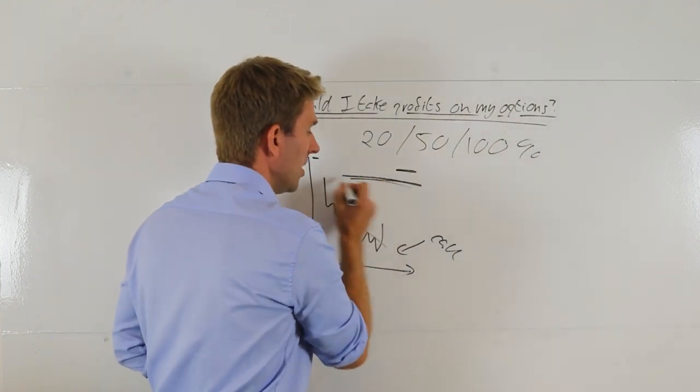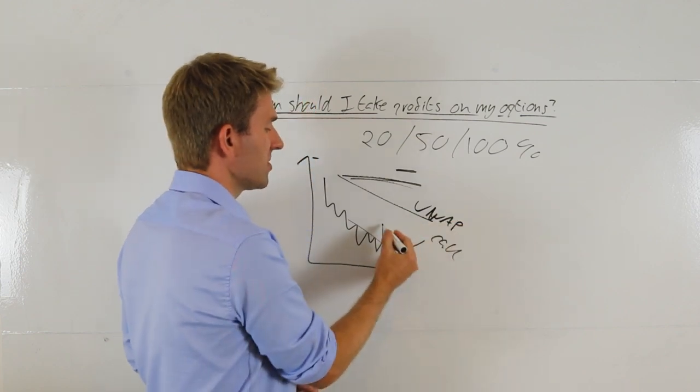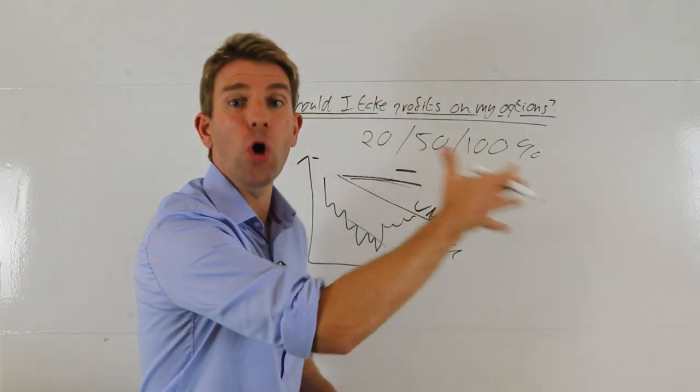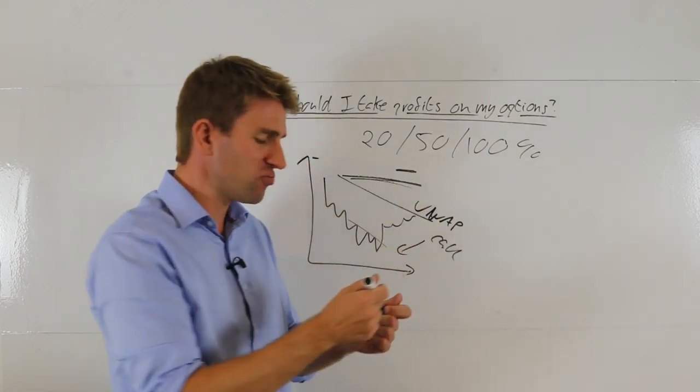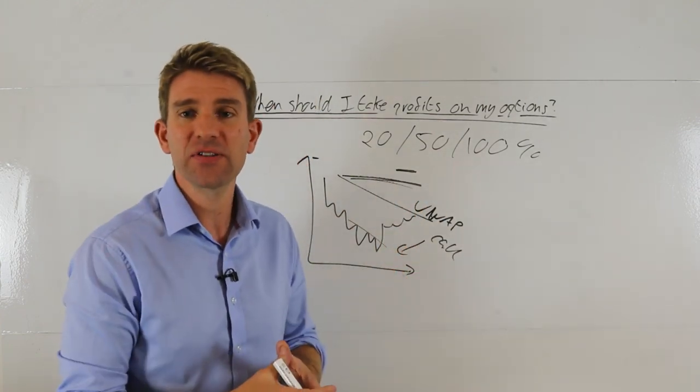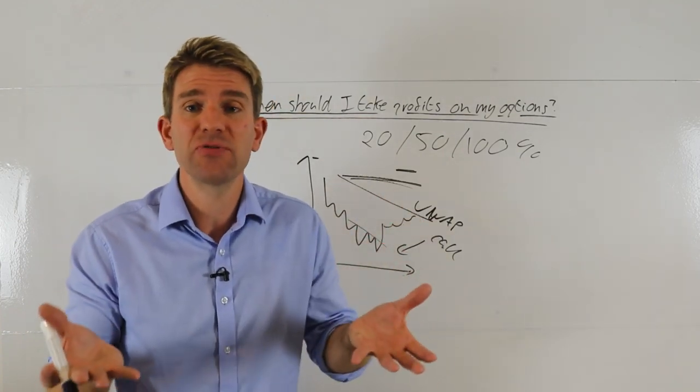But in reality, it might have come back up to your VWAP or some sort of mean reversion level that you've decided to take. And it's taken so long to get to it that the decay on the option has really hammered that price. And it's not that great. But in reality, you need to be looking at a chart and going, well, it's done what I set out to do.